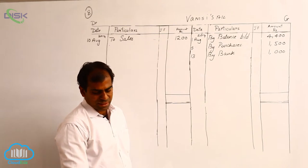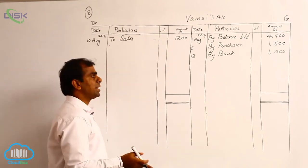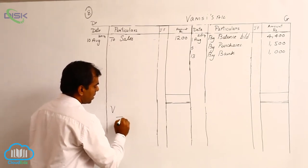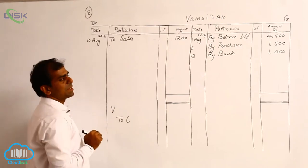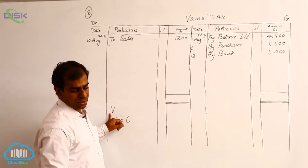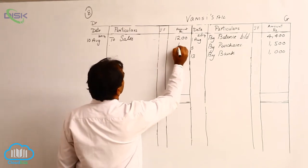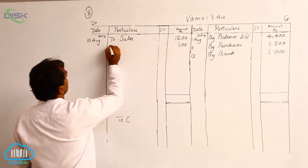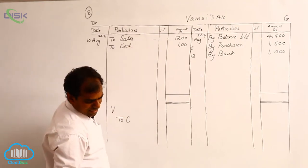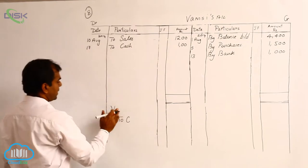On 17th, we paid cash to Vamsi. The journal entry becomes Vamsi account debit to cash. Vamsi's account is getting debited. On the debit side, we enter the amount 100. The reason is cash and the date is 17th August.